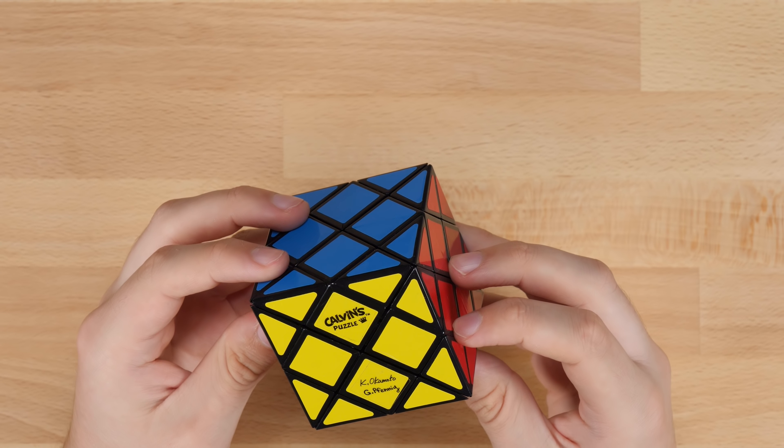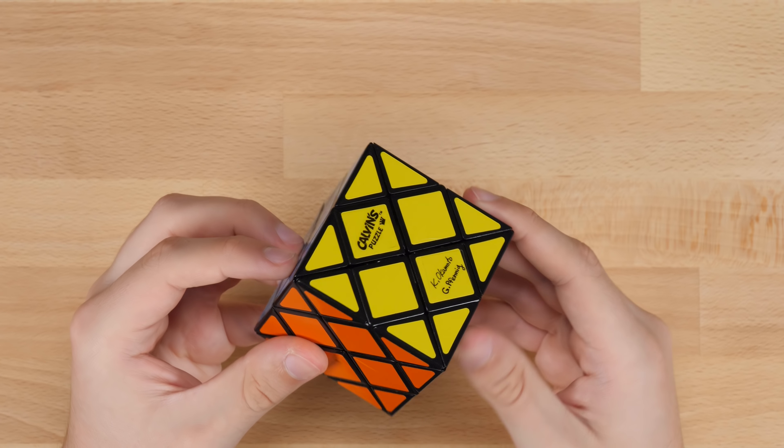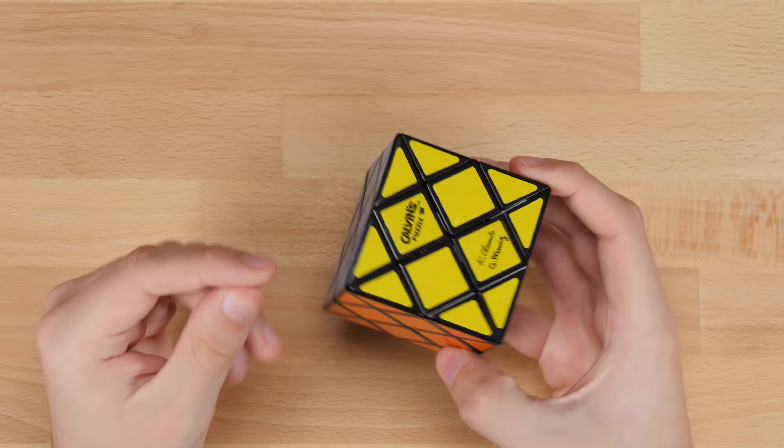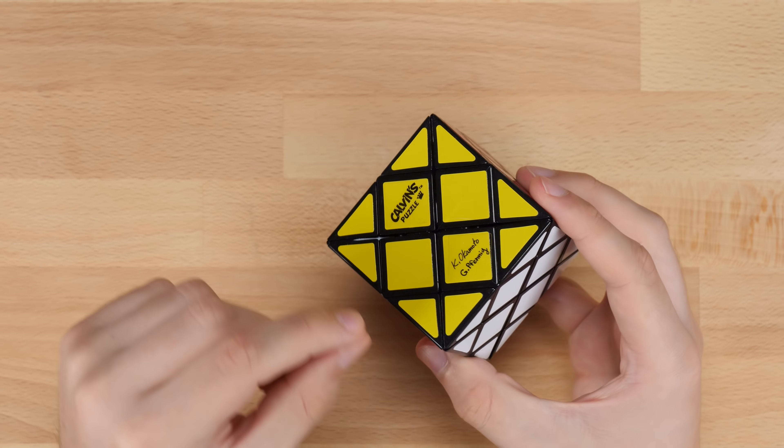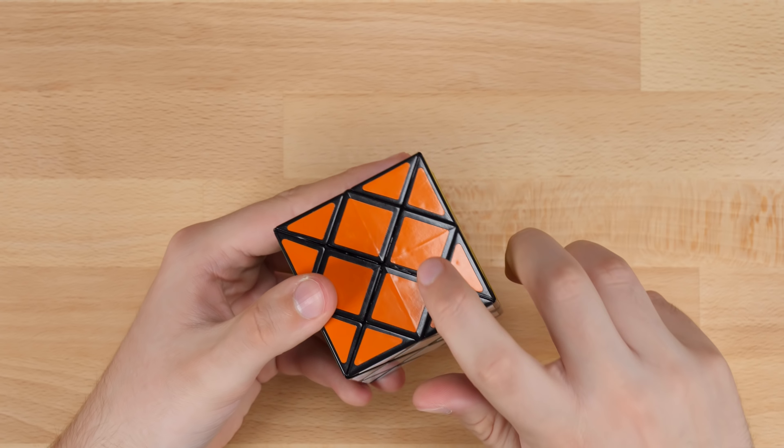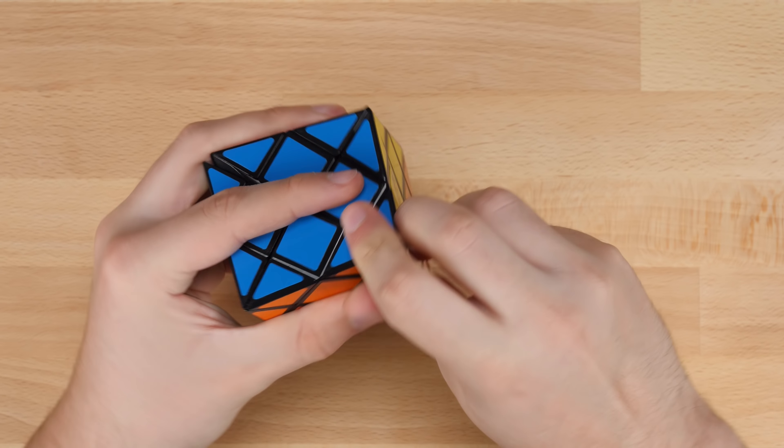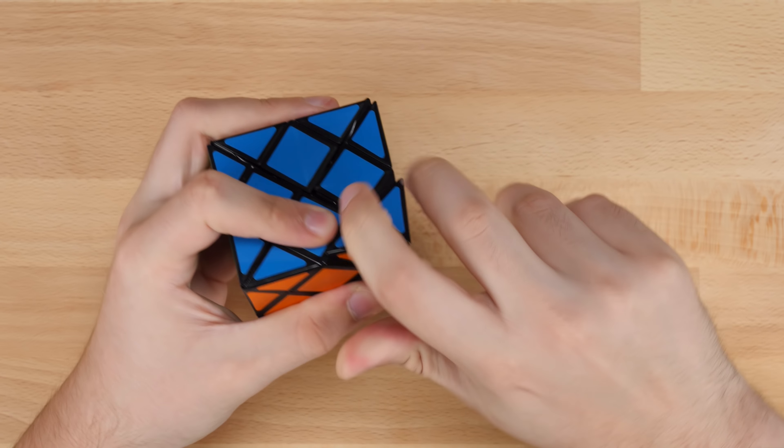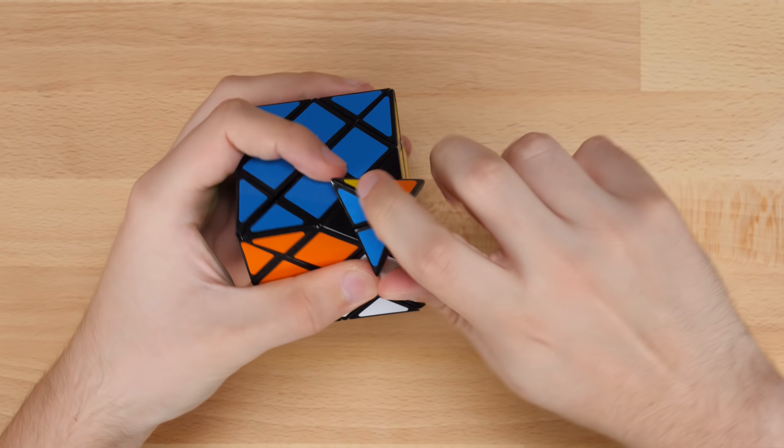So I think I know how I'm going to go about solving this. I think the easiest way to do it is just going to be to solve it like a dino cube and then put in these pieces with some simple 3 cycles. Which is very easy for these types of puzzles where you can just move a piece up, turn this top portion, if I can get it to move. There we go.